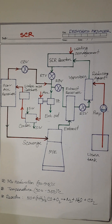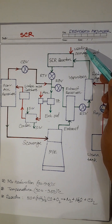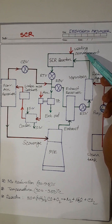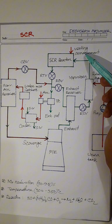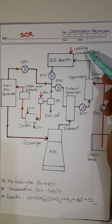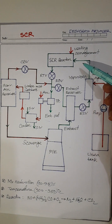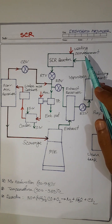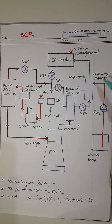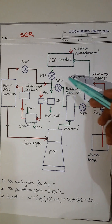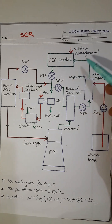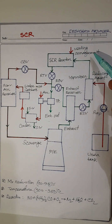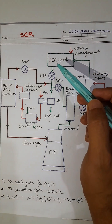Here you can see the venting arrangement. The function of venting arrangement is to avoid exhaust gas accumulation and soot formation in the SCR when the system is bypassed. That means during bypass operation, the SCR reactor is vented.